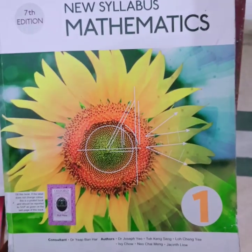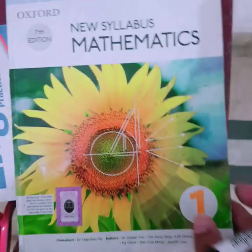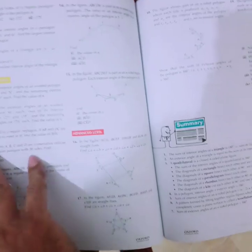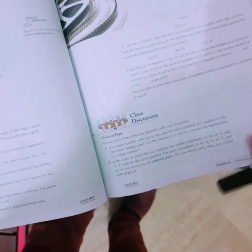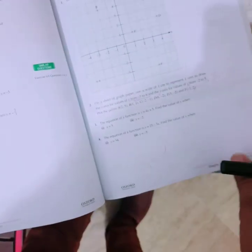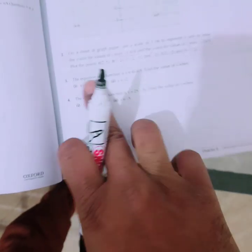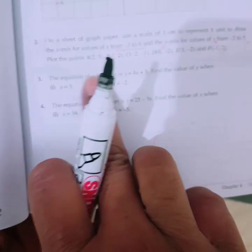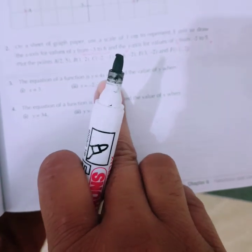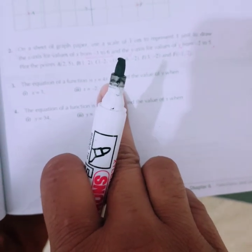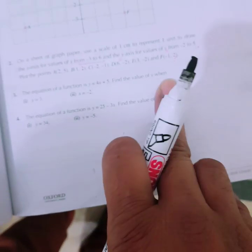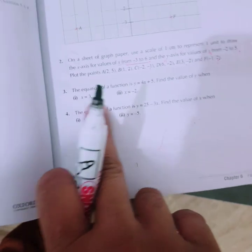D1 Maths for class 6 or 7, book page number 144, Exercise 6a, question number 3. The equation of a function is y equals 4x plus 5. Find the value of y when x equals 3.